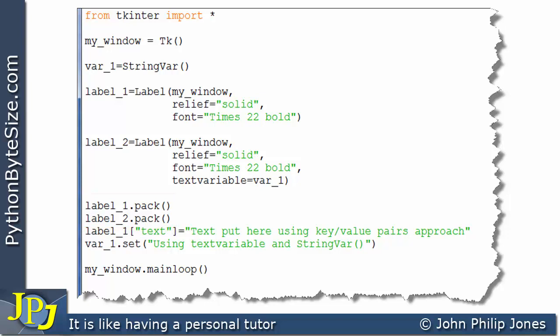Of course, earlier in this playlist, you will have learned that a label can be considered as having key value pairs. If I consider this label, for example, and look at this, the relief is the key and solid is the value. If I look at this, font is the key and times 22 bold is the value. And if I wanted to get at anything else associated with label 1 that doesn't appear here, text, for example, I can do so by regarding text as the key and assigning to that key a value that will then be displayed in the label.